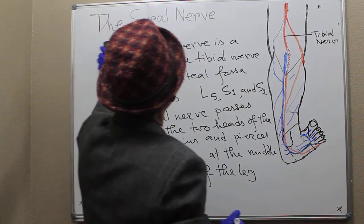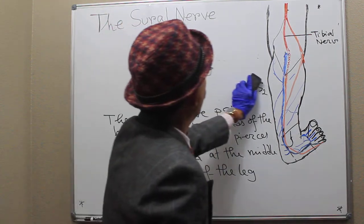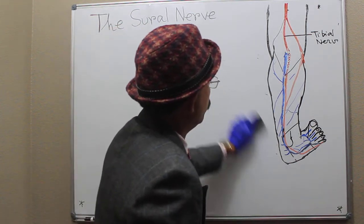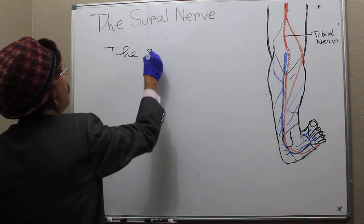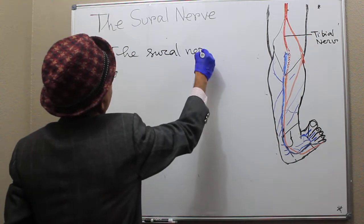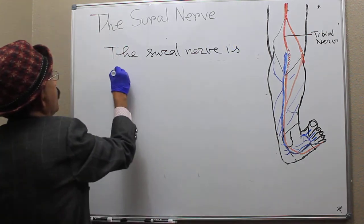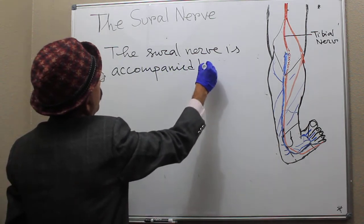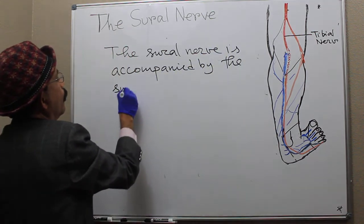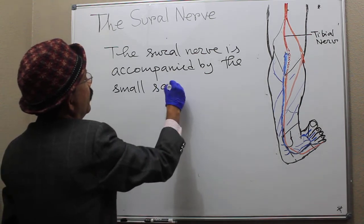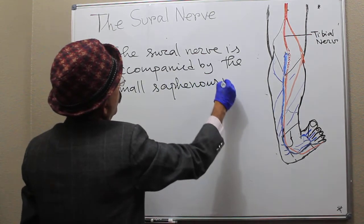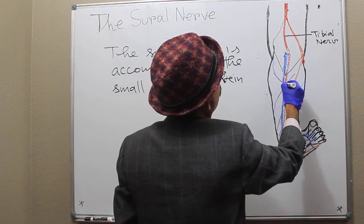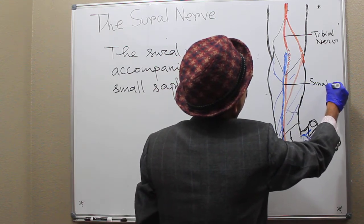The sural nerve is accompanied by the small saphenous vein. This is the small saphenous vein running alongside it.